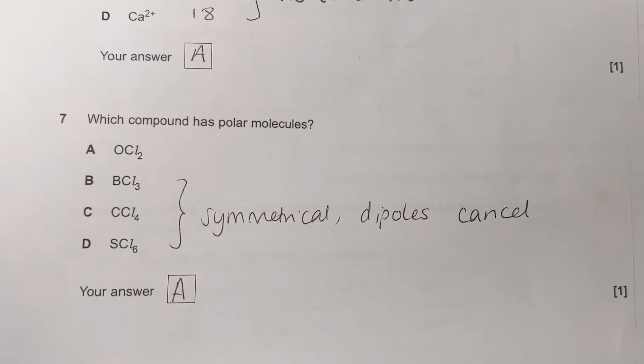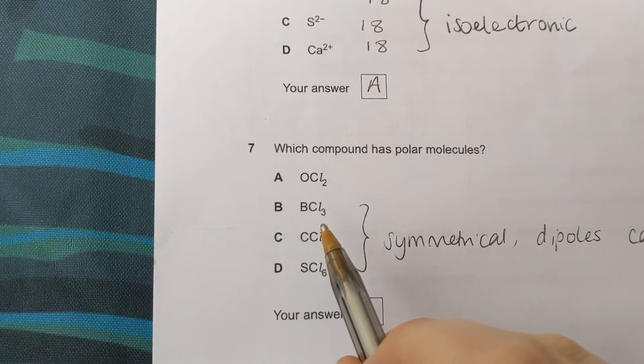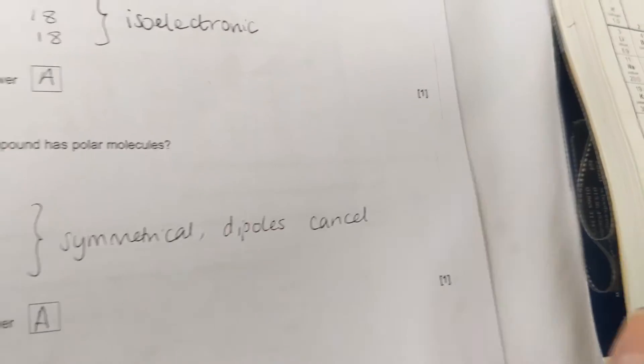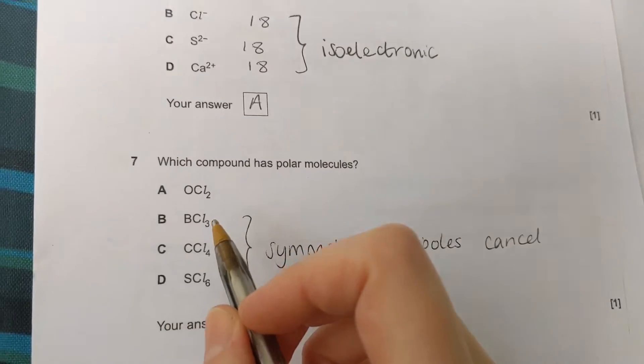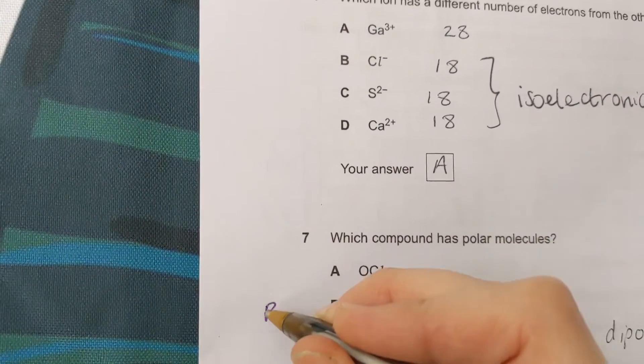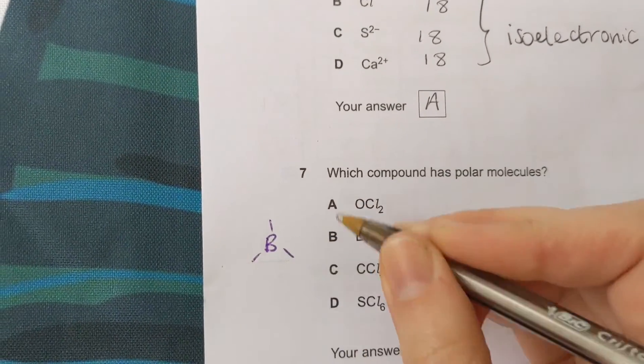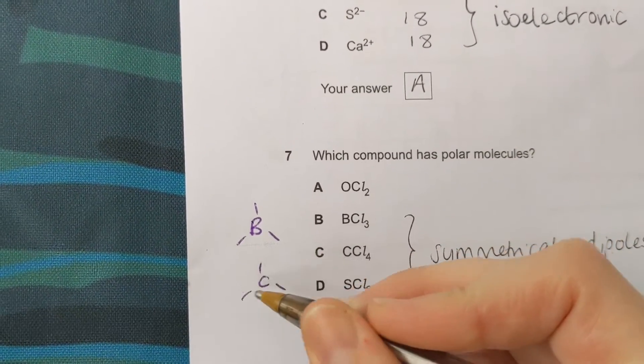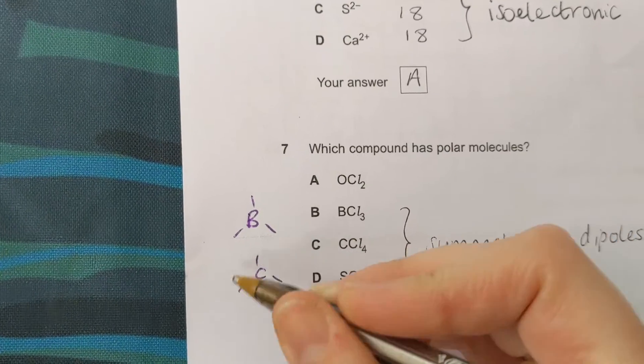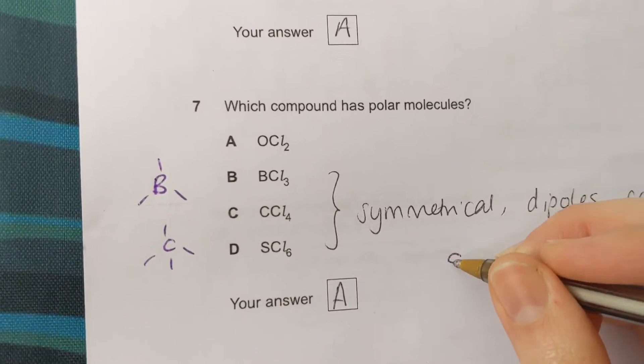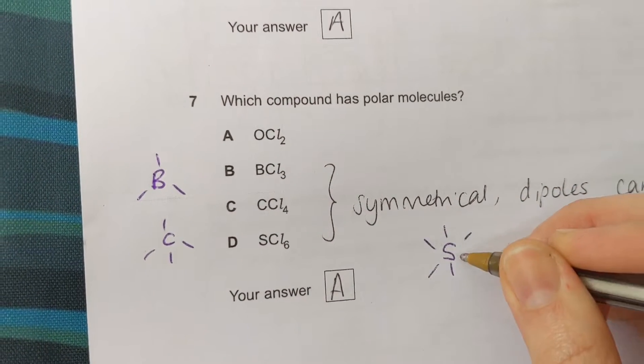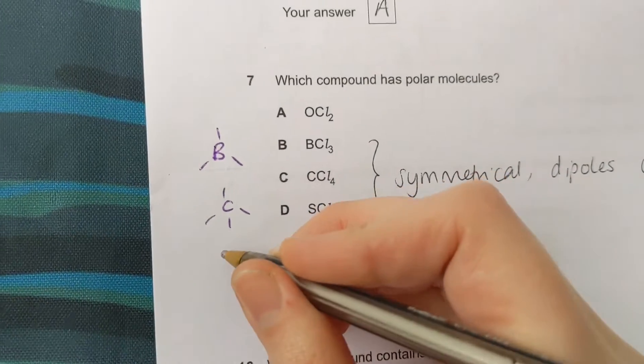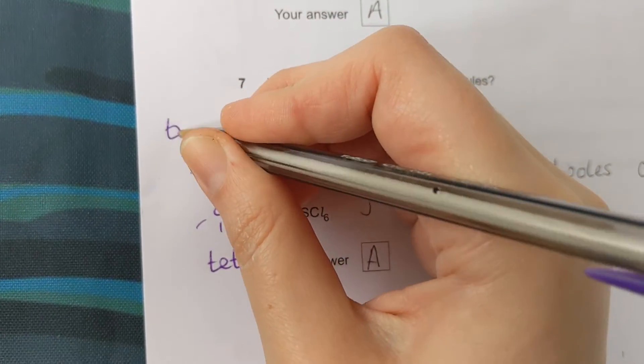Seven is about polarity and the shapes of these molecules. If you're unsure about the shapes, you can draw these starting with dot and cross diagrams and use your periodic table to help you draw those. This one, the boron has got three outer electrons, no lone pairs, so it's going to look like this with the chlorines around there equally spaced. CCl4—carbon's got four outer electrons, each chlorine is a single bond, it's going to be tetrahedral like that. And then SCl6, we've got the six chlorines equally spaced. So if we were to look at the shapes of the molecules, that one's octahedral, tetrahedral, trigonal planar.